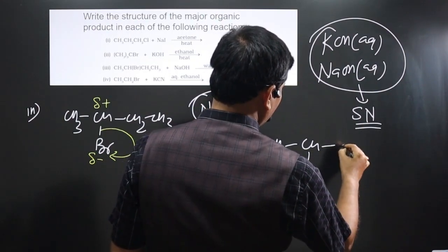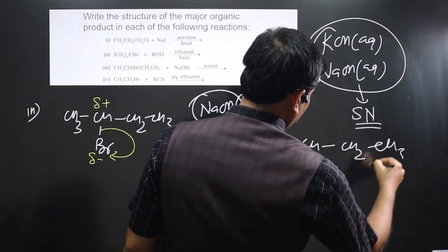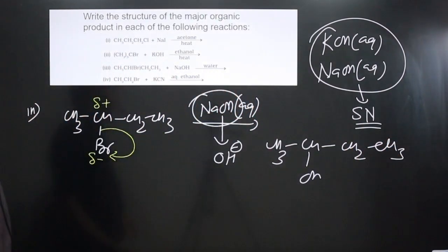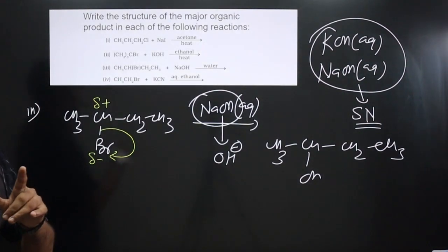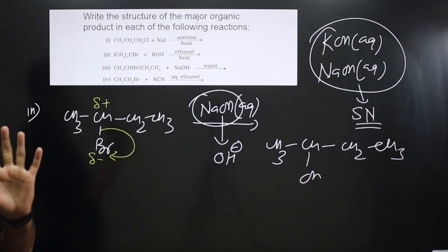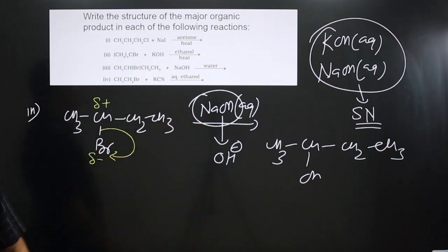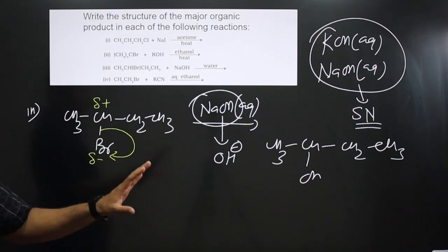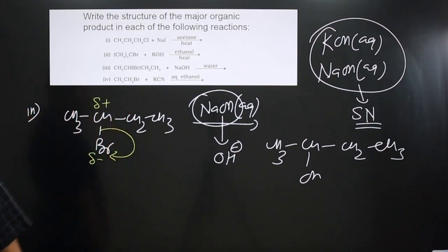The final product is CH₃CH(OH)CH₂CH₃. There is no rearrangement because we have a secondary carbon and a strong nucleophile, so it follows an SN2 pathway.